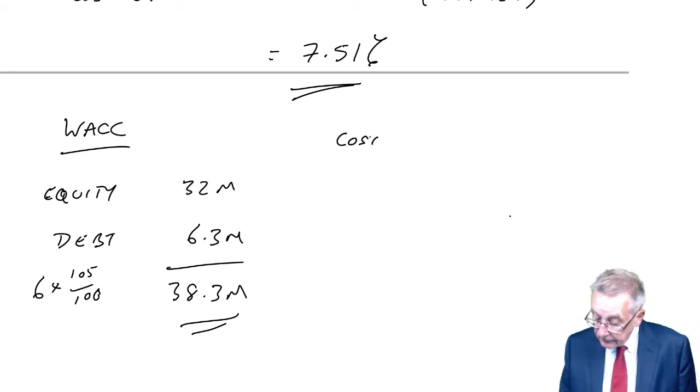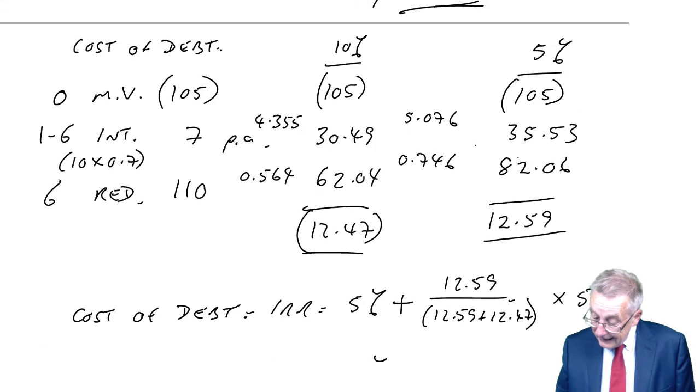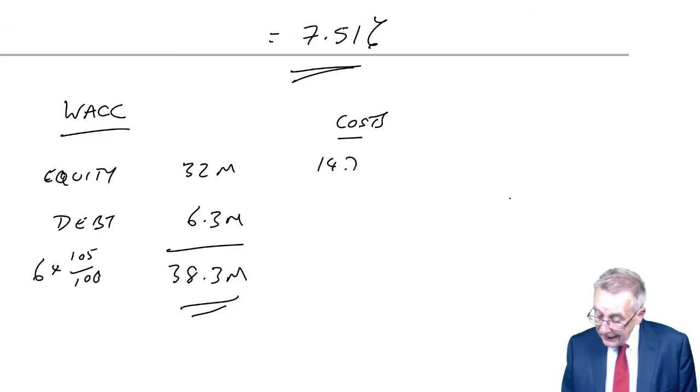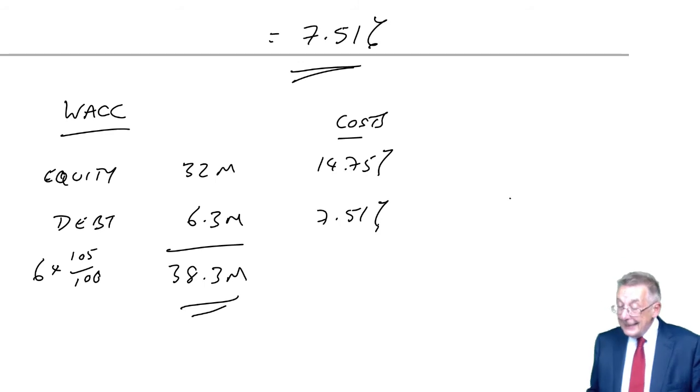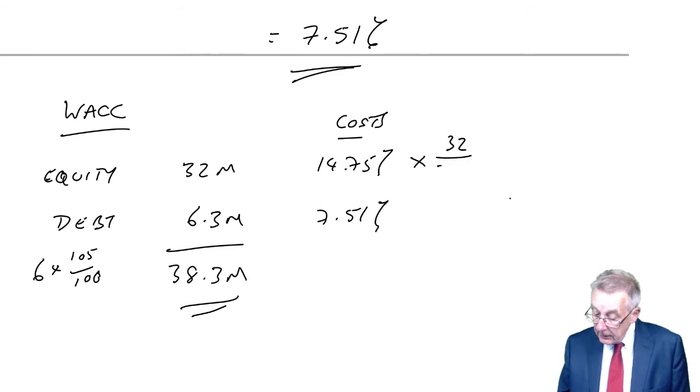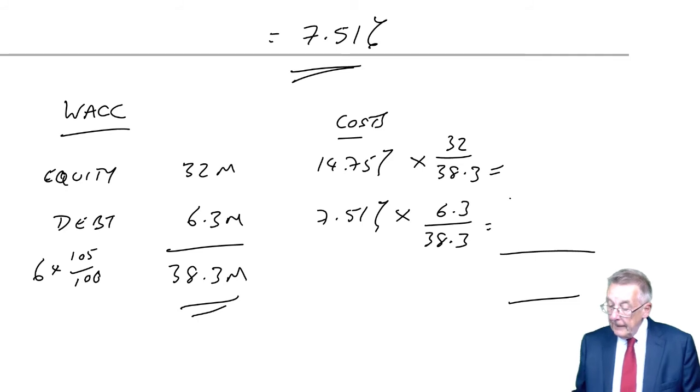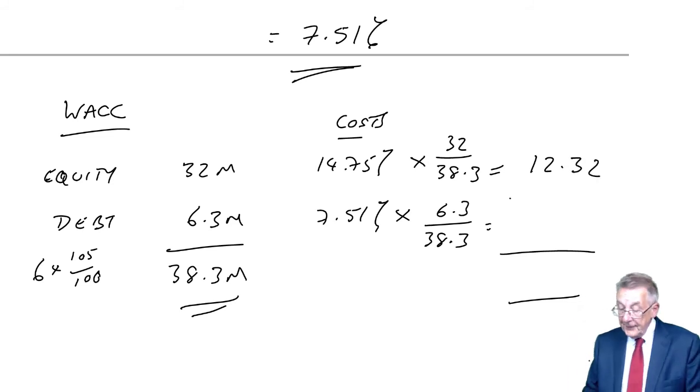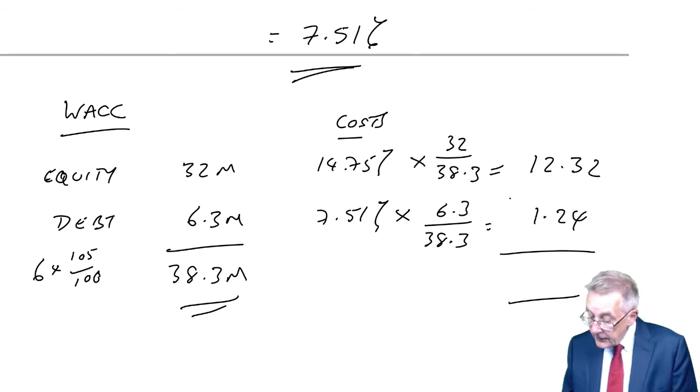The individual costs. 14.75 for equity. 7.51 for debt. And therefore, weight, equity multiplied by 32 over a total of 38.3. Debt 6.3 over a total of 38.3. So for equity, I get 12.32. For debt, 1.24. And so our weighted average cost of 13.56%.